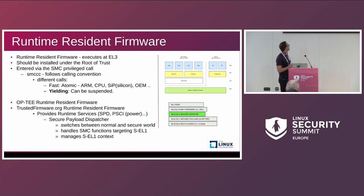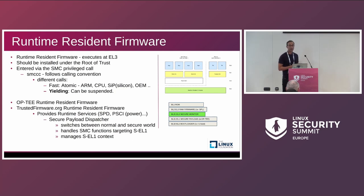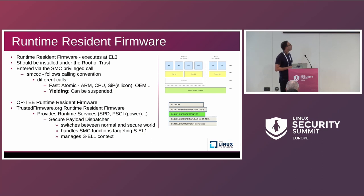In the trustedfirmware.org naming convention for the boot chain: BL1 is the ROM, BL2 is the first bootloader that executes in RAM — it could be SPL. Then you have the secure monitor, which people call TFA. Then the trusted execution environment — OP-TEE — is called BL32, and BL33 is the normal-world bootloader like U-Boot.